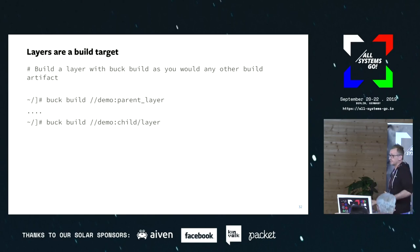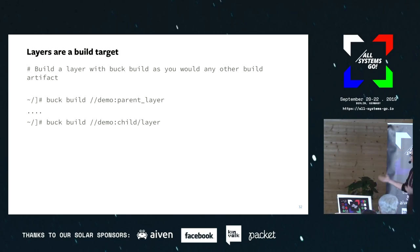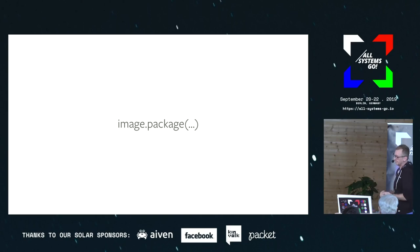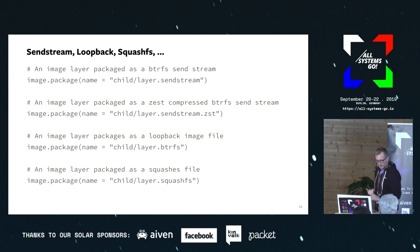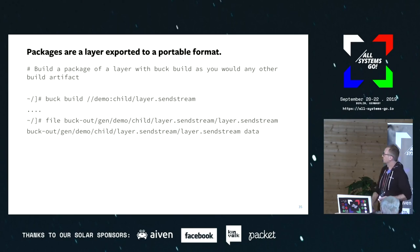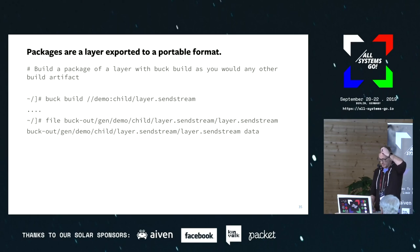The layers are the build targets — the features themselves aren't really build targets, they're inputs that go into building the actual layer. In the Buck system, you do 'buck build' and then the path to whatever that layer target is. After you have a layer, it's built inside your working environment but you need to export it in a format you can ship around — that's what image_package does. Right now we support SendStreams, ButterFS loopback image files, and SquashFS outputs. It takes the sub-volume contained inside the build environment and exports it in the specified format.